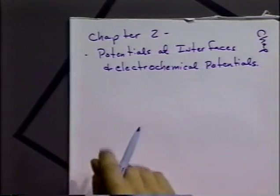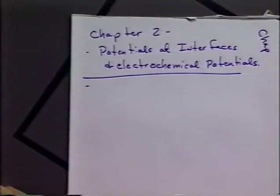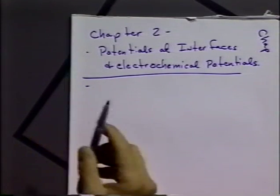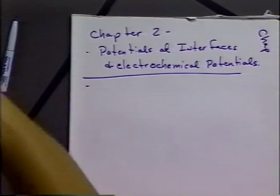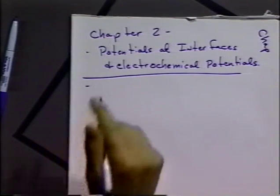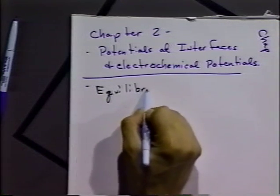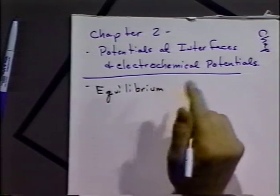We're going to be talking about potentials of an interface and electrochemical potentials. The first part of the chapter, we're going to discuss the thermodynamics of electrified interfaces, and that has to do with how the Nernst equation can be developed to develop a chemical and cell potential. The first thing we have to consider is whether or not our interface is at equilibrium, because most of the standard thermodynamic treatments require that we have an equilibrium system.